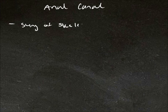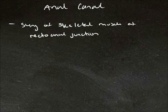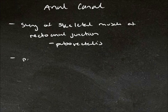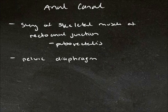Now we'll move on to the anal canal. This is surrounded by a sling of skeletal muscle at the junction between the rectum and the anus called the rectal anal junction, and this muscle is called puborectalis. The anal canal commences at the pelvic diaphragm and ends at the anus.